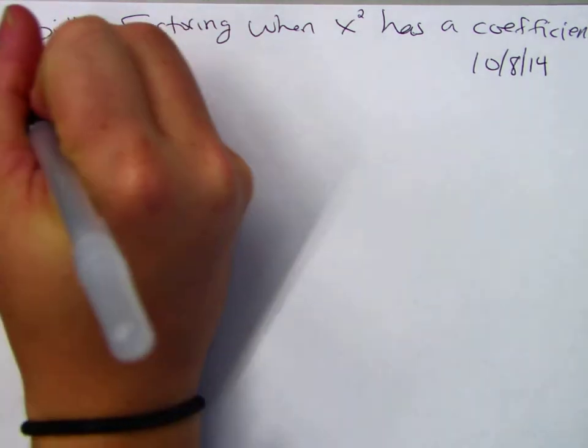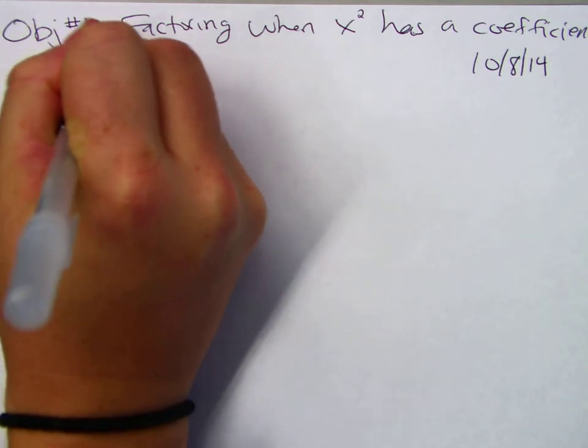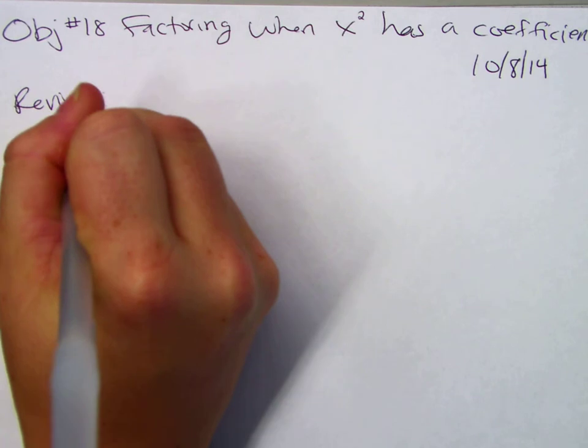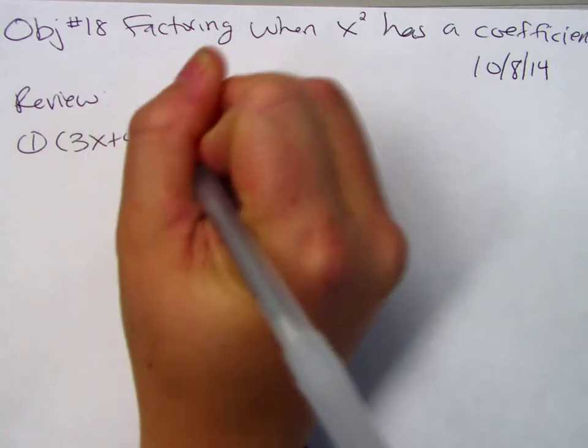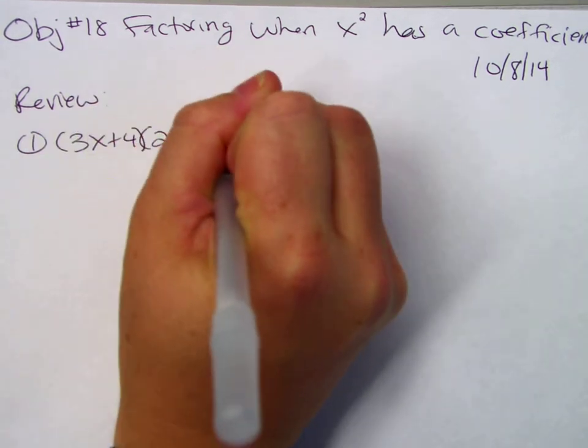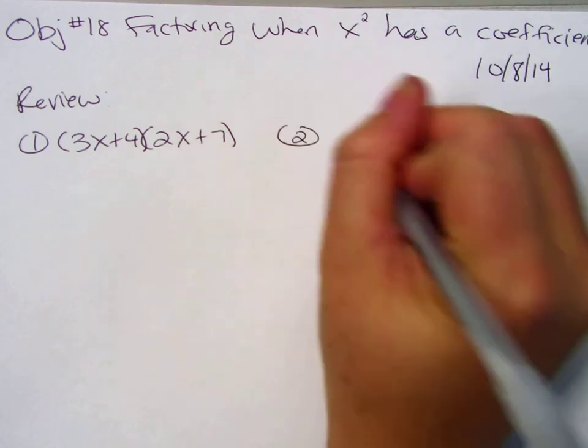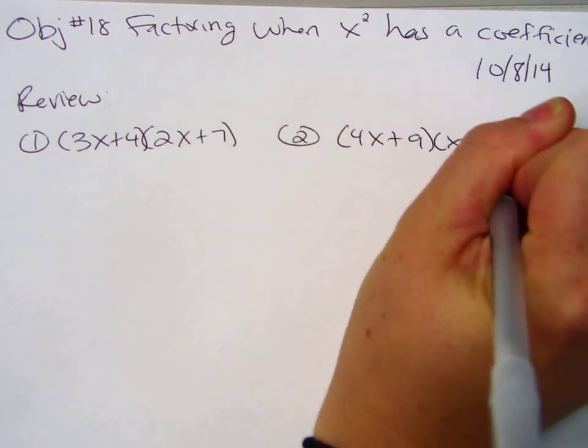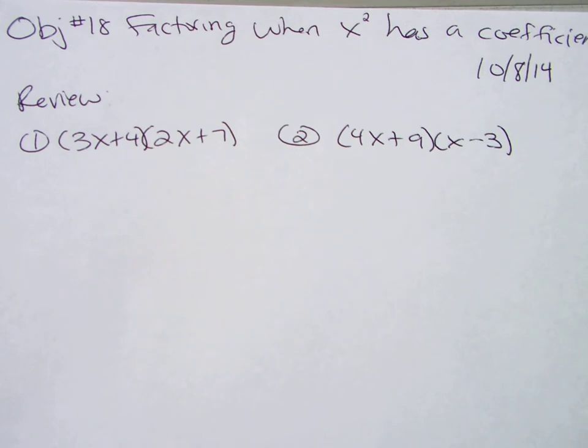So let's do a quick review of multiplying. If you have 3x plus 4 times 2x plus 7, and the second one is 4x plus 9 times x minus 3, pause the video, multiply those out.